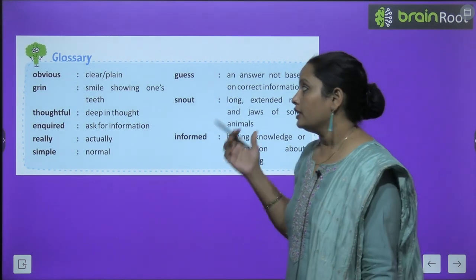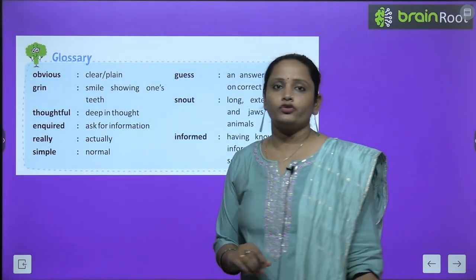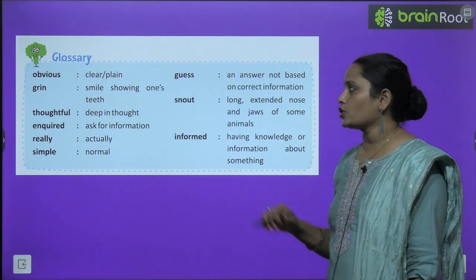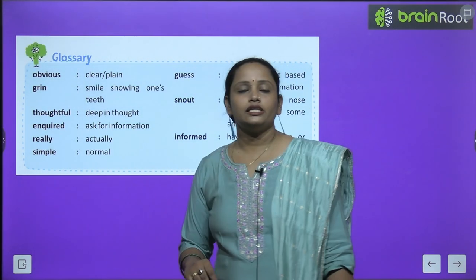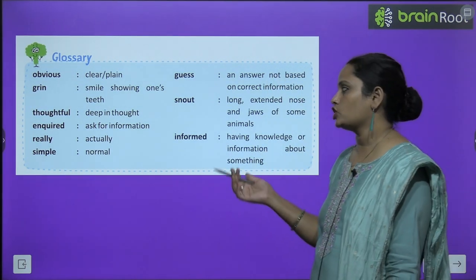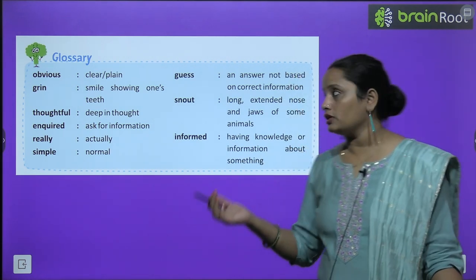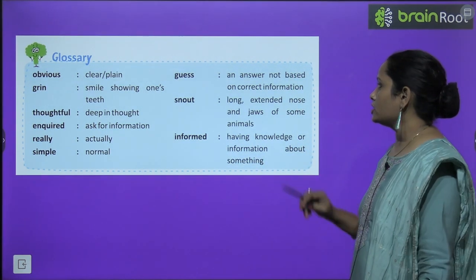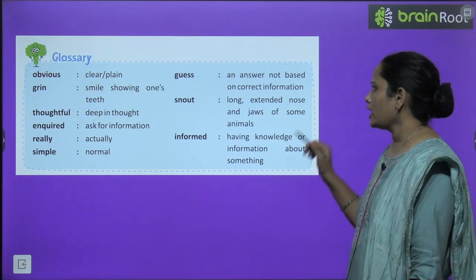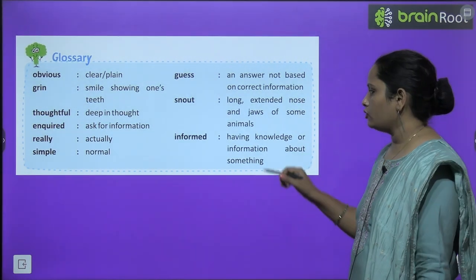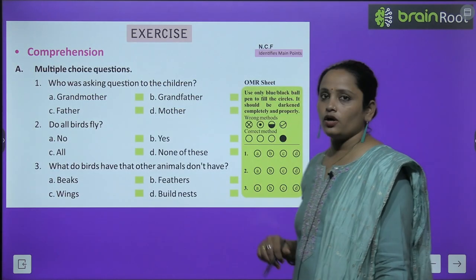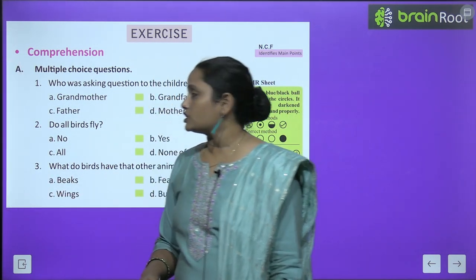So children, this was the chapter. Now let's move on to glossary. The first word is 'obvious' which means clear — एकदम साफ साफ। 'Grin' means smile showing one's teeth। 'Thoughtful' means deep in thought — sochna। 'Enquired' means ask for information। 'Really' means actually। 'Guess' — unanswered, not based on correct information। 'Snout' means long extended nose and jaws of small animals। 'Informed' means having knowledge and information about something।